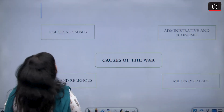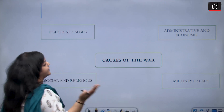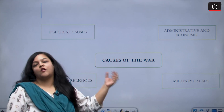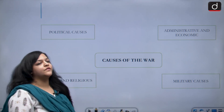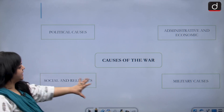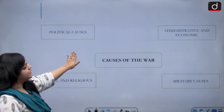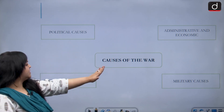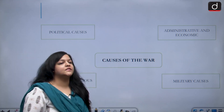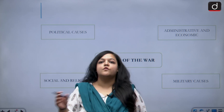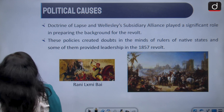So we have the causes of the Revolt of 1857, also known as the causes of the First War of Independence. I've made a short flowchart here. We have political causes, administrative and economic causes, and then social, religious, and military causes. These are the main categories we will be discussing.